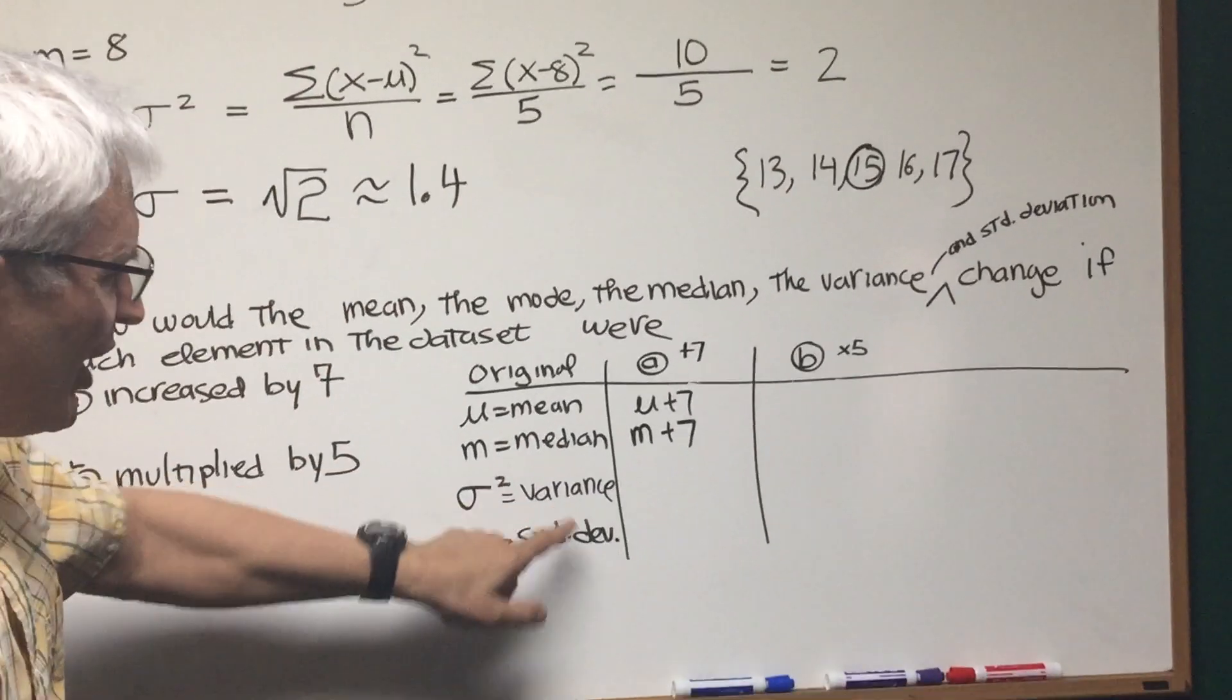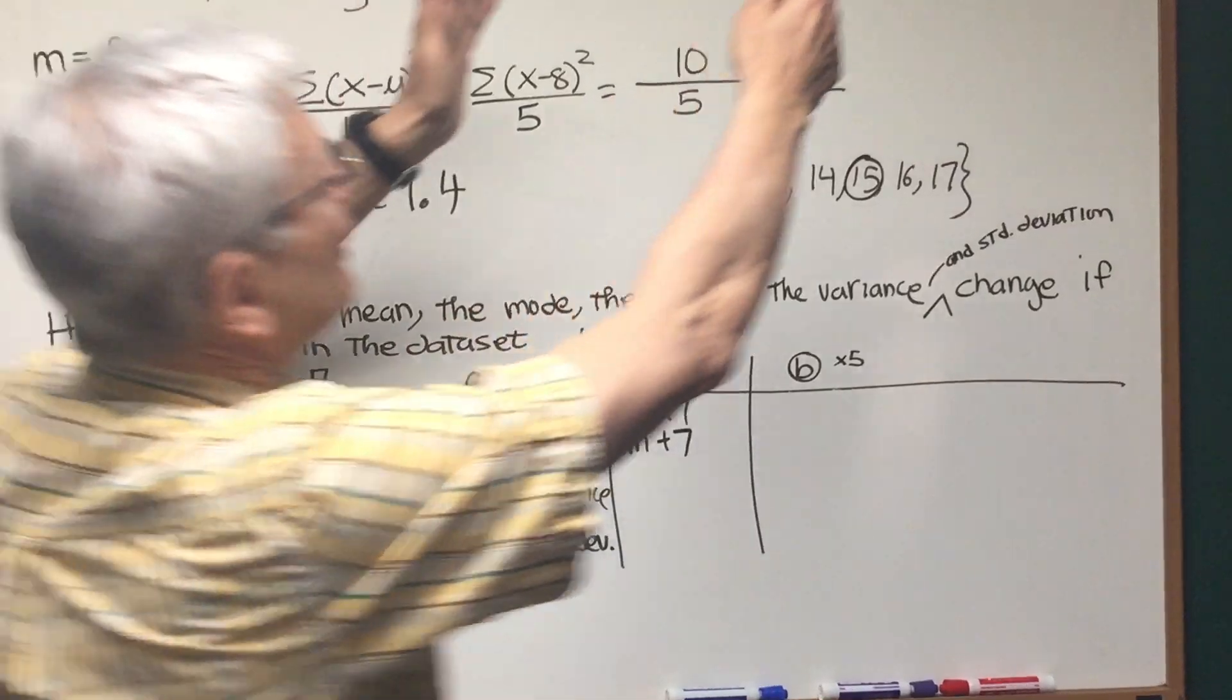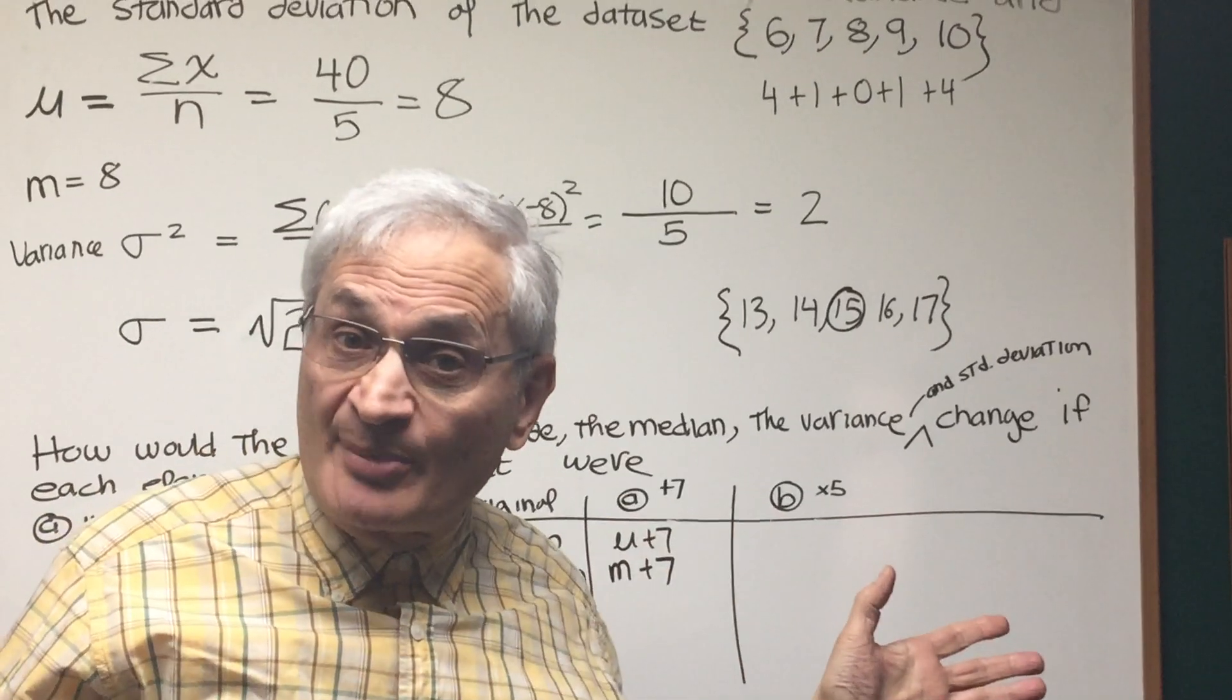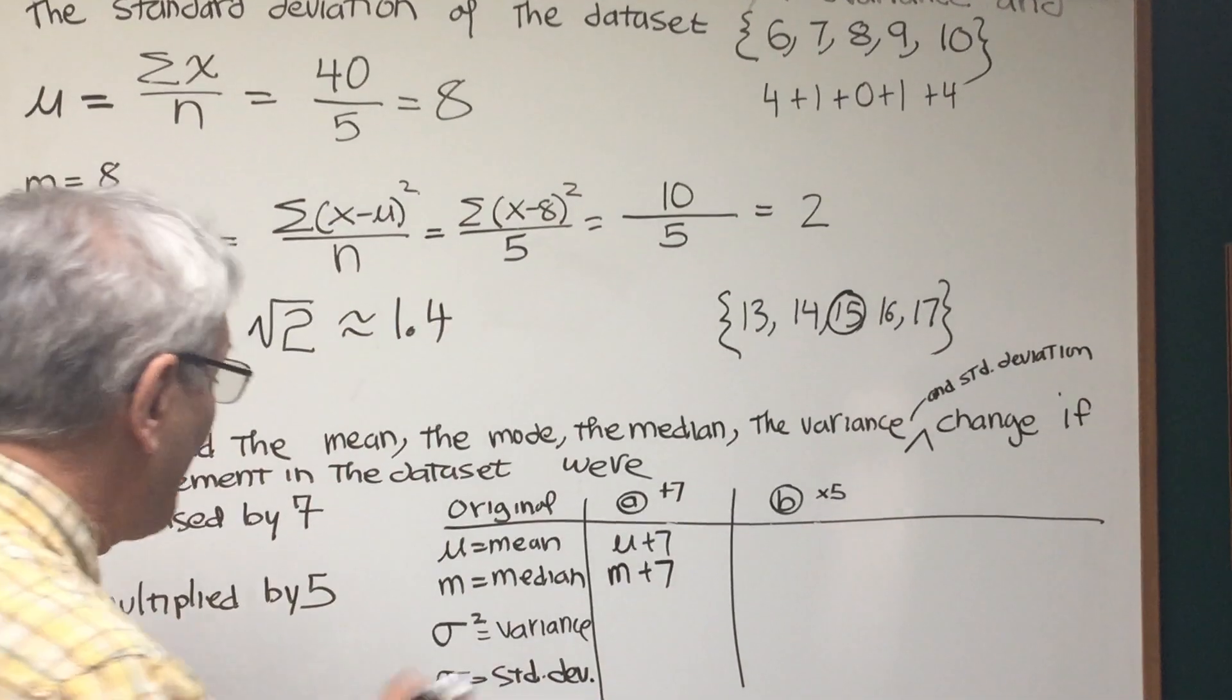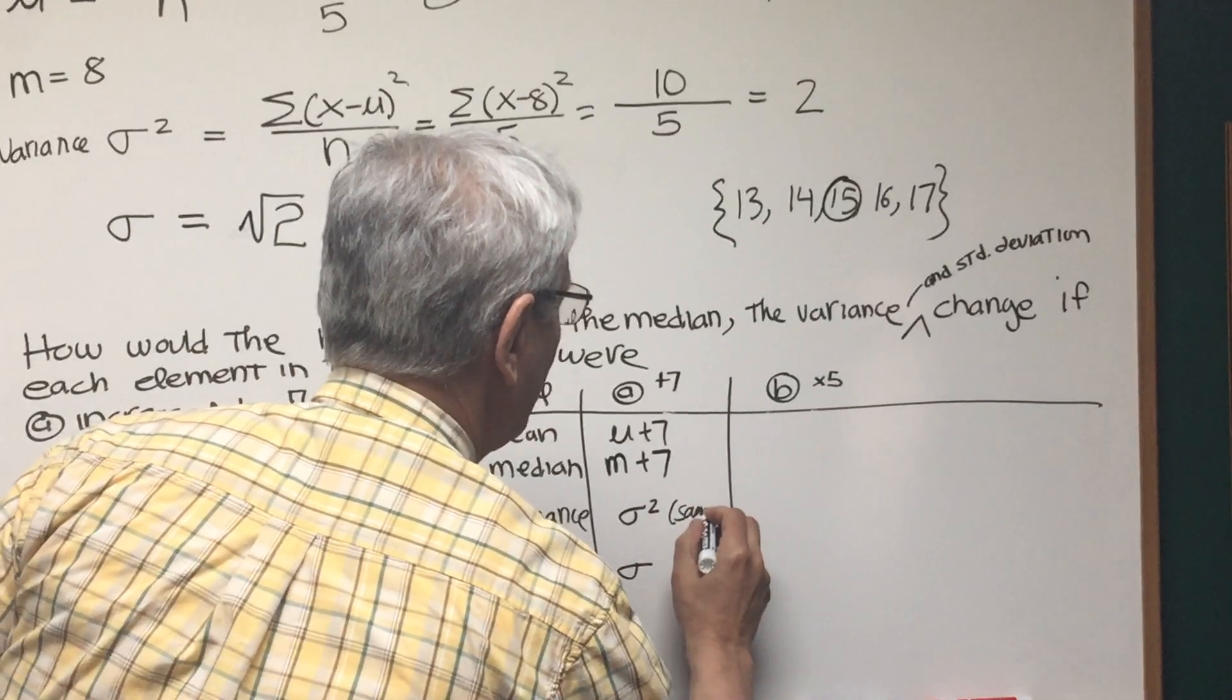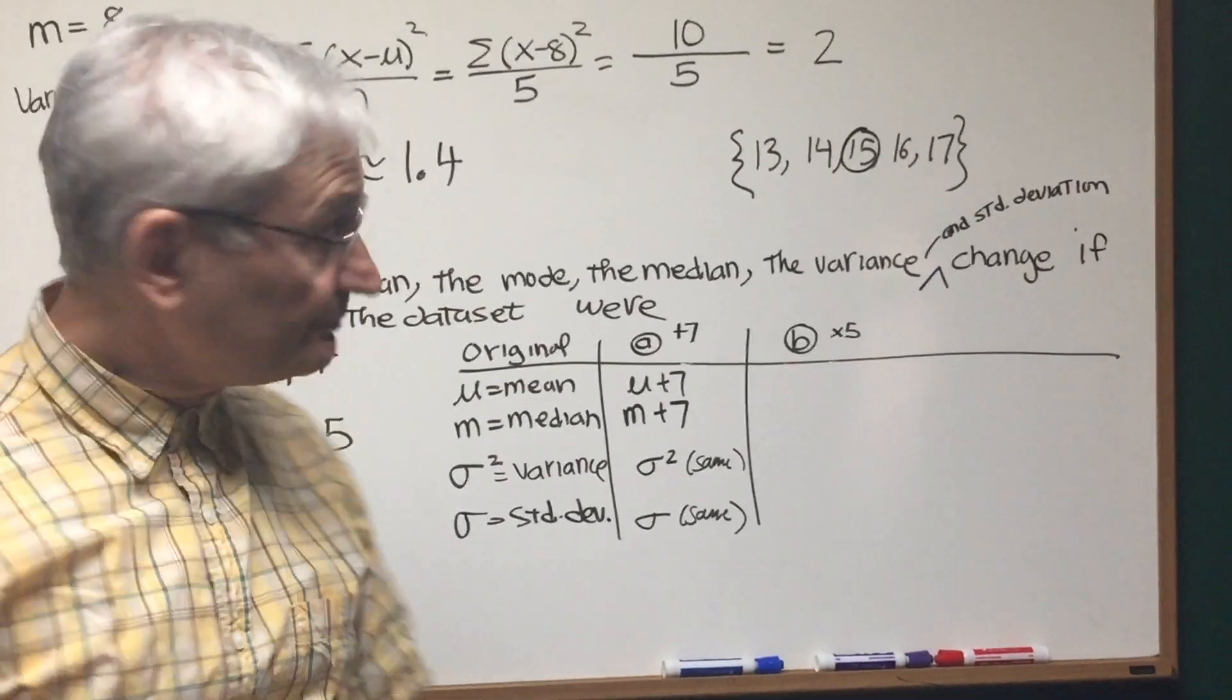Now how are the variance and the standard deviation going to change with that shift to the right? Well, notice if you shift this number set, if you take this data set and shift it to the right, you are not changing its dispersion on the number line. It's still occupying the same spread on the number line. Therefore, the variance and the standard deviation are going to remain exactly the same. The dispersion is not affected whatsoever.